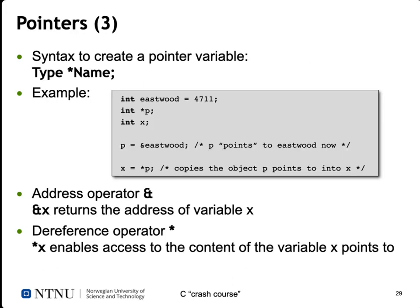The syntax to create a pointer variable is: give a type like int or char, then the asterisk character, then the name of the pointer variable. Here's an example with integer variable Eastwood given the value 4711, a pointer to an integer variable called p, and another uninitialized integer variable x. In the following line we initialize our pointer p so it points to the memory location containing the value stored in Eastwood.